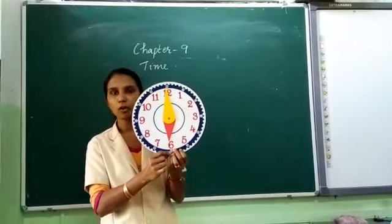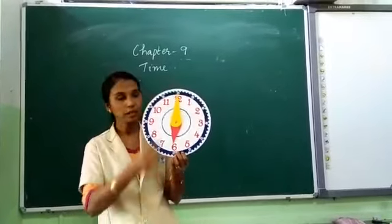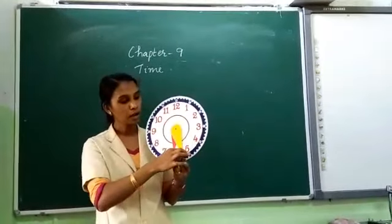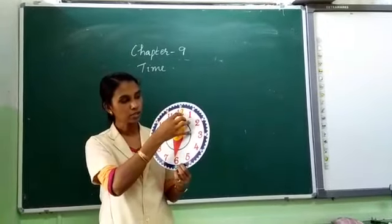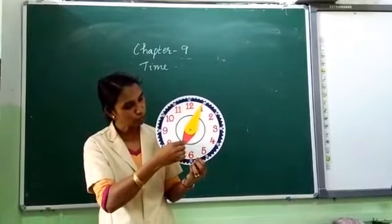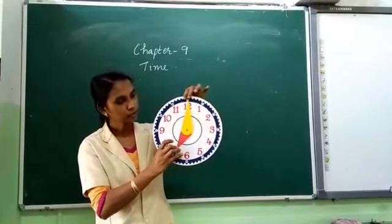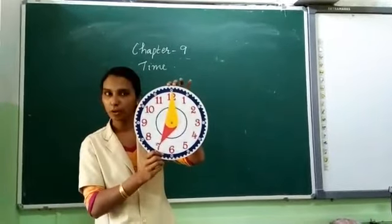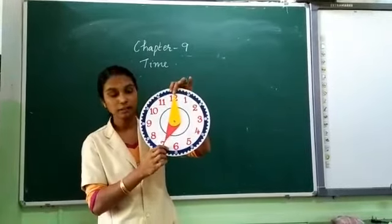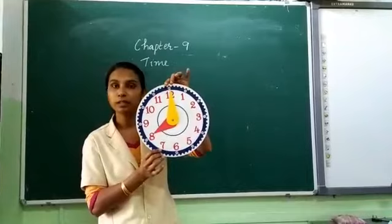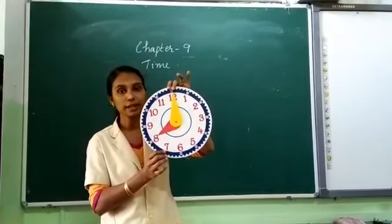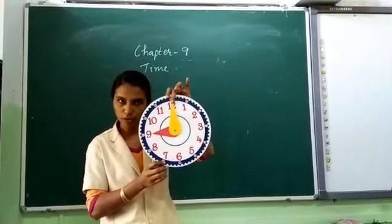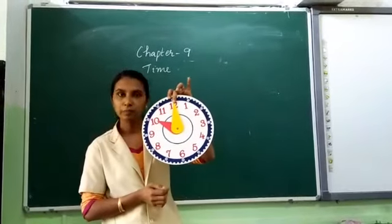Then to the next hour, this long hand — the minute hand — makes a complete rotation, and the hour hand moves to 7. Now the time is 7 o'clock. Then can you tell the next hour? It is 8 o'clock. Then next: 9 o'clock. Then what is the time? 10 o'clock.